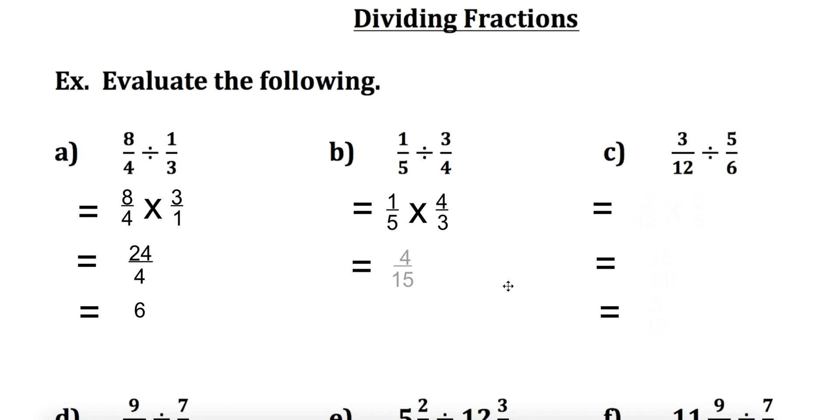Again, same thing here. We're multiplying straight across. The important thing to do is always to flip that second fraction. Never forget to switch the sign and flip the second fraction. And then reduce down.